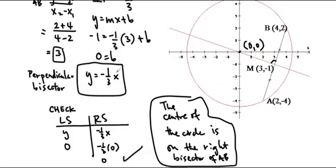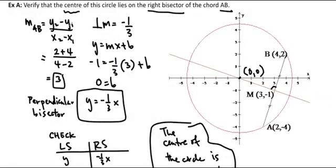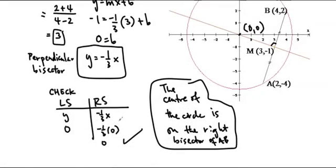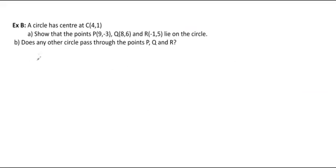We're just showing all of our steps logically. Next question: a circle has center at C(4, 1). I want to show that the points P, Q, and R all lie on the circle. It doesn't tell us what the radius is, so we're first going to find the radius of the circle. Let the radius be r.